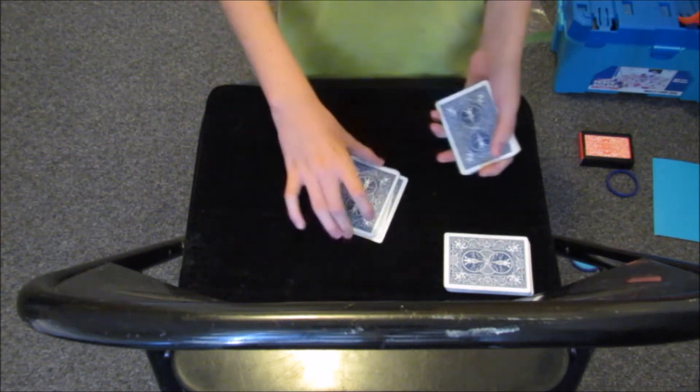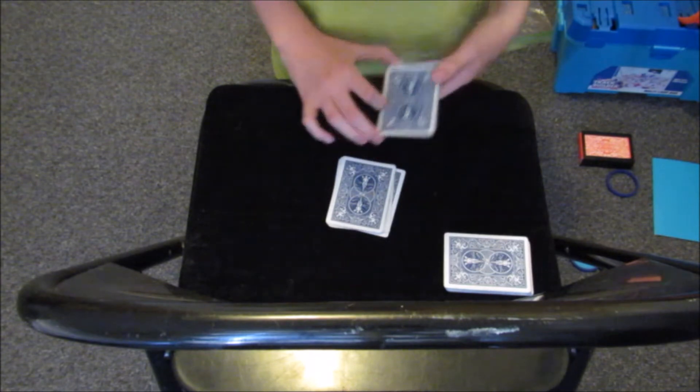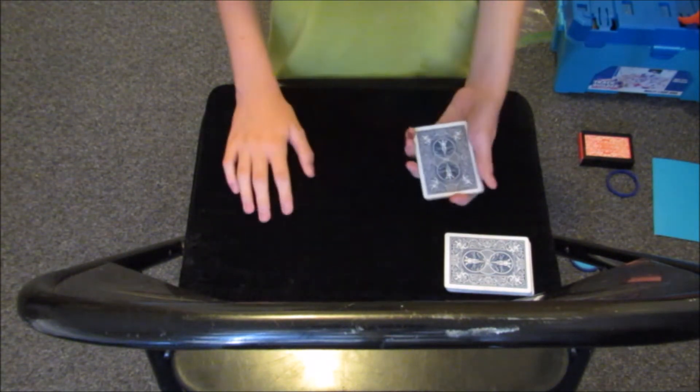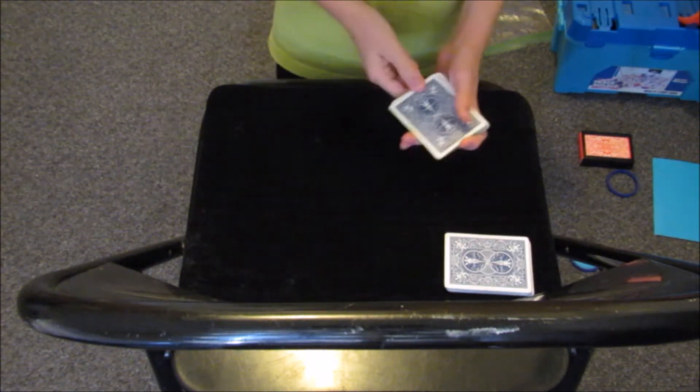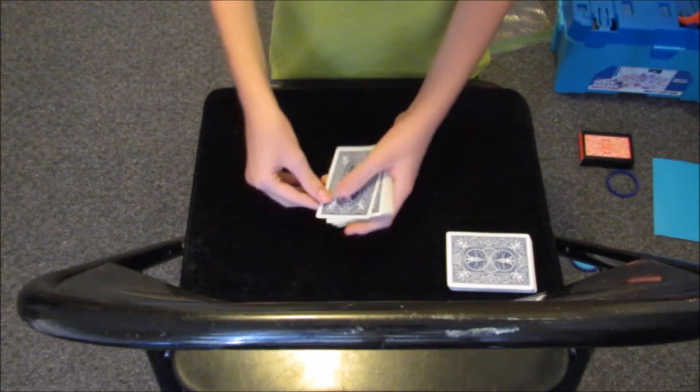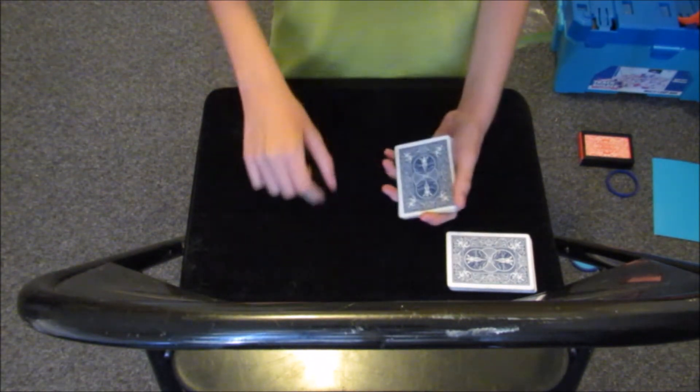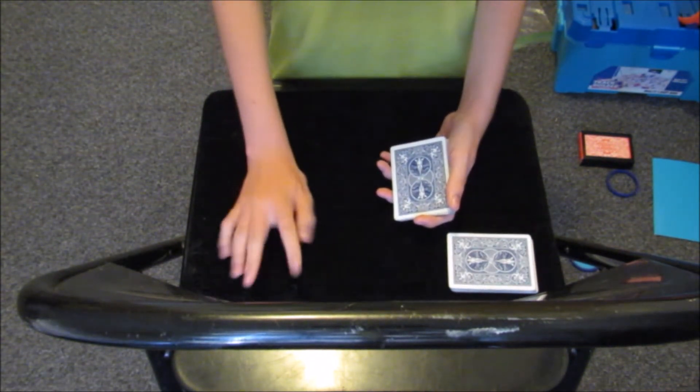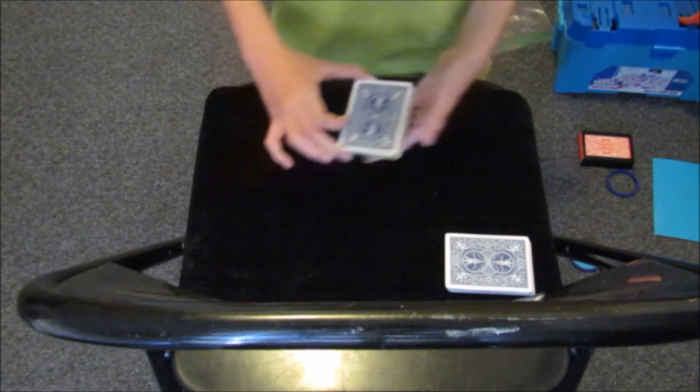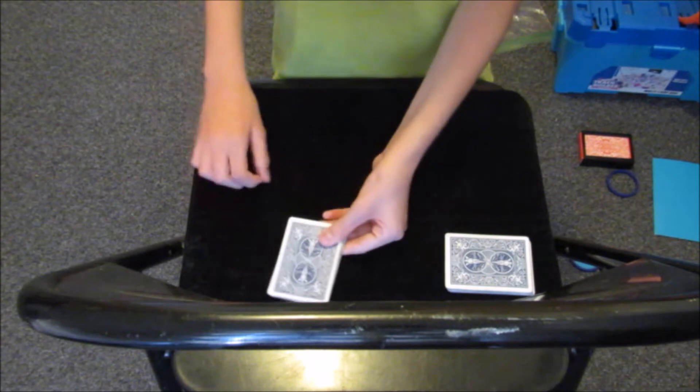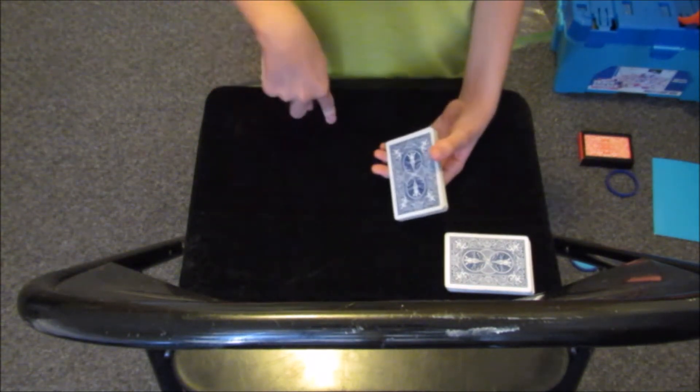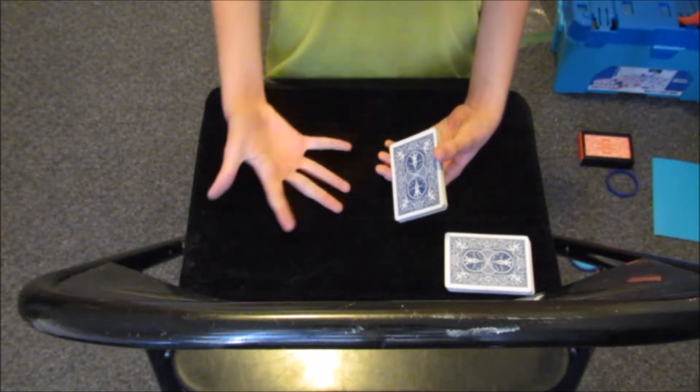Now we're just gonna put each of our packets on top of each other, doesn't really matter which one. Hand the pack to the spectator and have them deal poker hands, five cards each. From my view, they deal me first, like this: one, one, two, two, three, three, four, four, five, five.